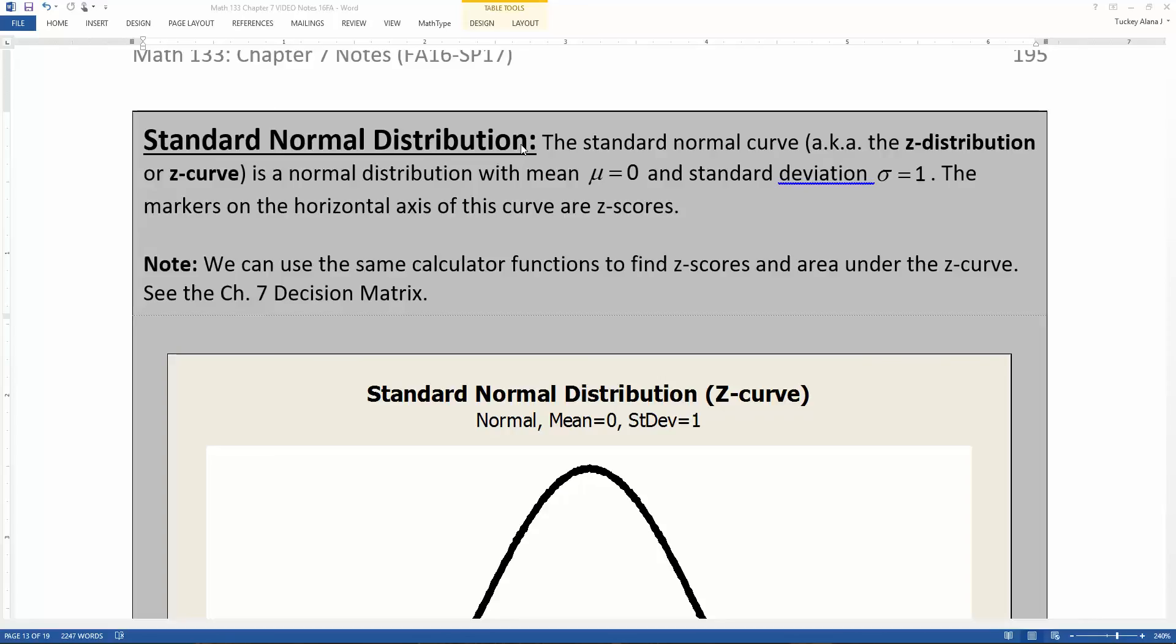So we've learned how to find the area under a normal curve using normal CDF, and then we've also learned how to take the area under a normal curve and give back the x value that would have given you that area, which is using inverse norm. So now we want to fine tune this to a very particular normal curve called the standard normal distribution, also known as the z-distribution or the z-curve.